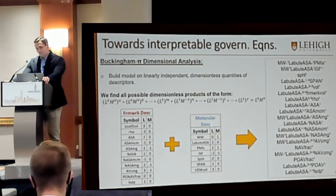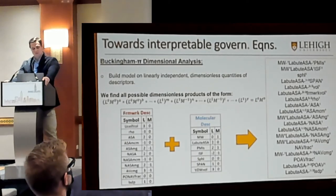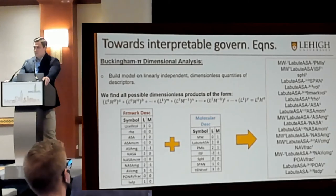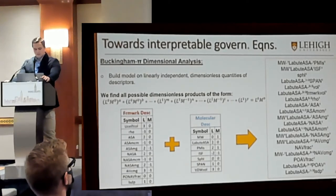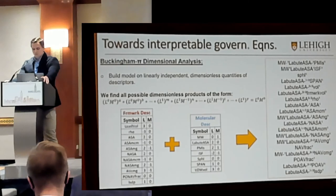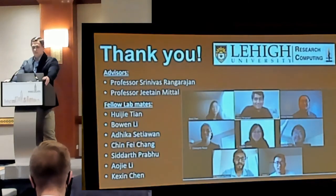The next steps we're deciding to take is to create interpretable models based on these results. We have the sensitivities and we know which descriptors are important. One quintessential engineering approach is to perform a Buckingham Pi analysis, where we take our descriptors and form independent dimensionless quantities. Here in red I have all of our framework descriptors and in blue our molecular descriptors, and we can separate their fundamental units in terms of length and mass to systematically generate dimensionless quantities. We can either use these to build another neural network where all inputs will be independent, or use them to create more interpretable models such as analytical regression. With that I would like to conclude and thank my advisors, my fellow lab mates, and I look forward to your questions. Thank you.